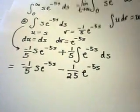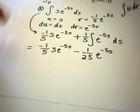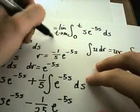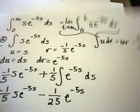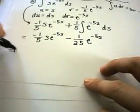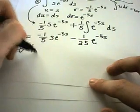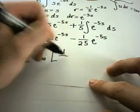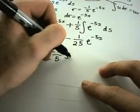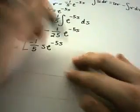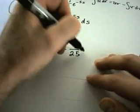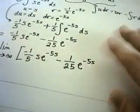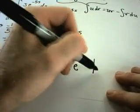You'd get a plus C, but remember the context of this problem. I now know what the antiderivative is — it's all of this. So I'm just going to plug it all back in. I've got the limit as t goes to infinity of: negative one-fifth s·e^(−5s) minus one over 25 e^(−5s), evaluated from 0 to t.